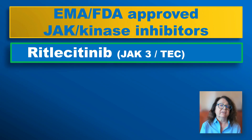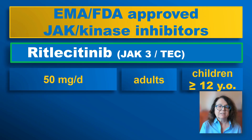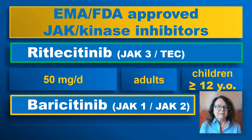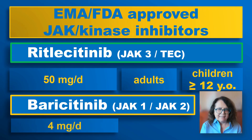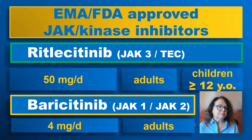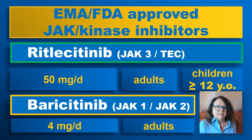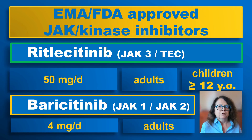Which JAK inhibitors do we have available now? There is ritlecitinib, approved at a dose of 50 mg per day — one tablet per day — for patients who are 12 years old or older and for adults. And there is baricitinib, approved for adults only. From the perspective of Europe, at a dose of 4 mg, and in some cases we may decrease the dose to 2 mg. In America, the usual way to start would sometimes be 2 mg and then it can be titrated up to 4 mg.